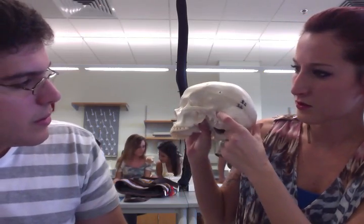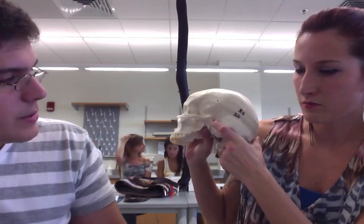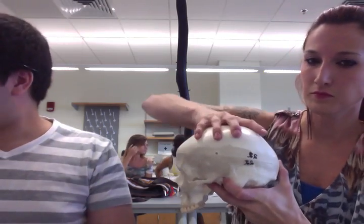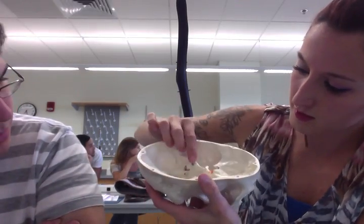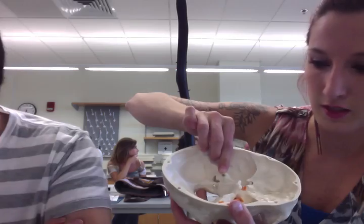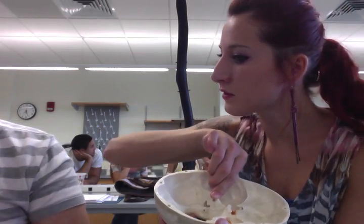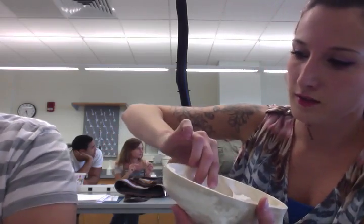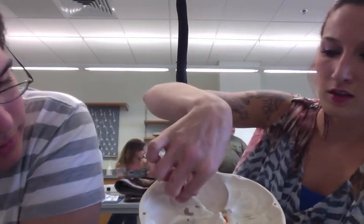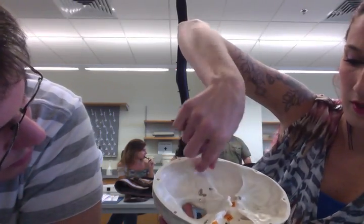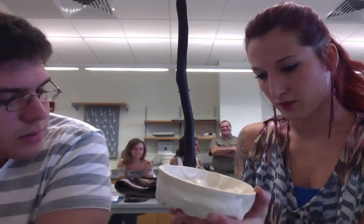We have the external acoustic meatus, which is the hole right here. If you go inside, you'll see that it connects to here. This hole is the internal acoustic meatus. The canal is the otic capsule — O-T-I-C. The otic capsule is the canal that connects the external and internal.